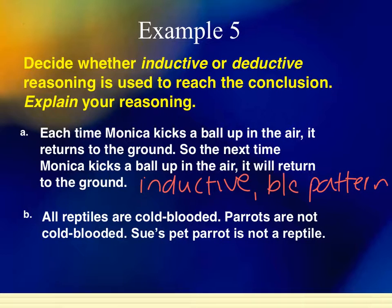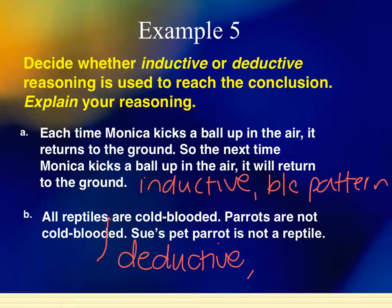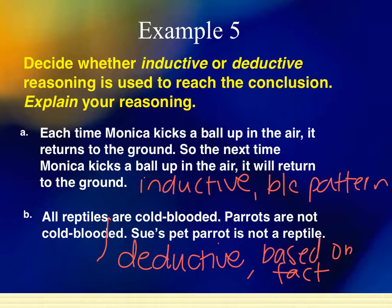All reptiles are cold-blooded. Parrots are not cold-blooded. Therefore Sue's pet parrot is not a reptile. That's deductive — cold-blooded is an actual fact, and it's based on fact. Anything using definitions is deductive. For example: an acute angle is less than 90 degrees; angle A is 40 degrees; therefore angle A is acute. That's deductive reasoning.